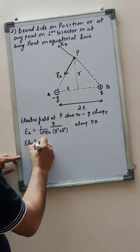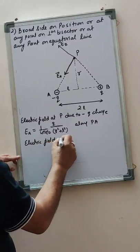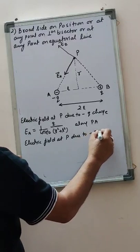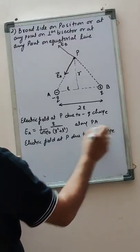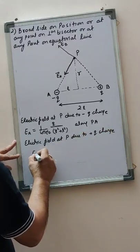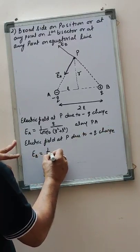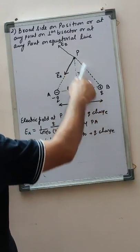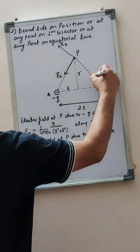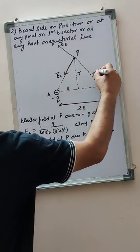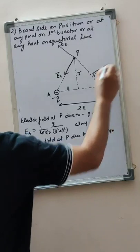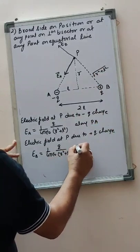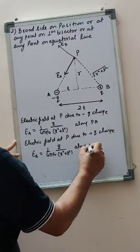Electric field at P due to plus q charge: Eb equals 1 by 4 pi epsilon naught, q upon the distance — again the same distance, under root of r square plus l square, whole square, so r square plus l square. This is along DP.